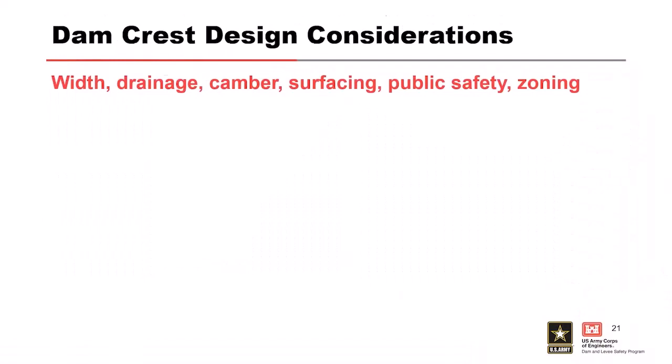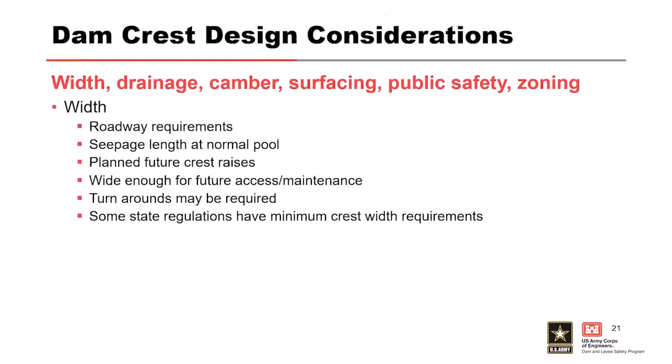Now walking through the dam crest — design considerations with drainage, camber, surfacing, public safety, and zoning. For width, it depends on what the roadway is going to be used for — whether public access or just O&M standpoint. The seep length at normal pool and above also controls this. Some embankments have a phased approach for water supply — building to a certain elevation because of funding, then raising later depending on water demand.